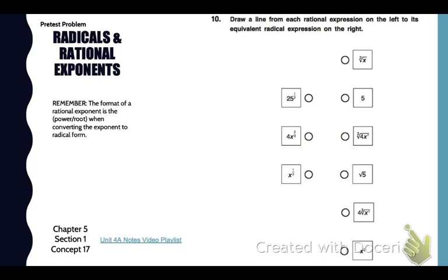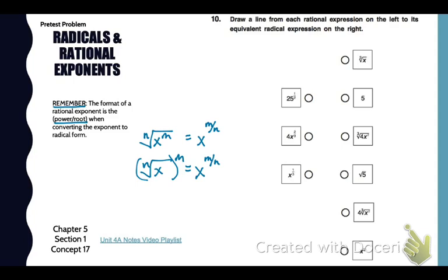First, we're going to look at some radical and rational exponents. Remember, the format of a rational exponent is the power divided by the root when converting the exponent to radical form. So in general form, the nth root of x to the m power equals x to the power over the root, so m over n.